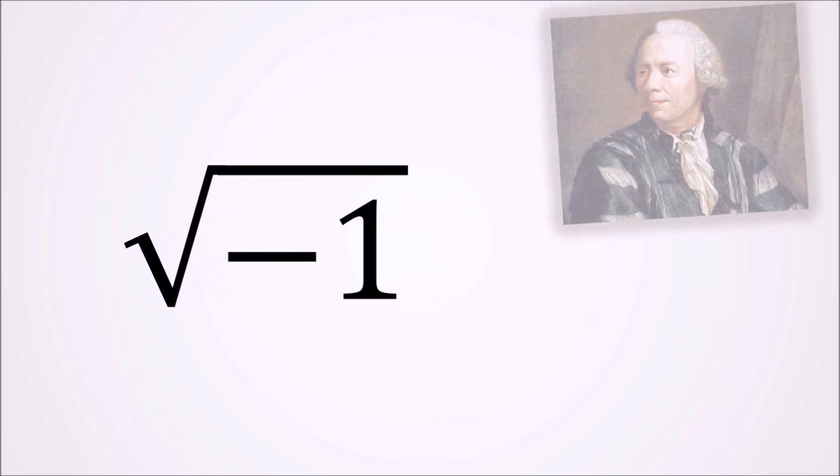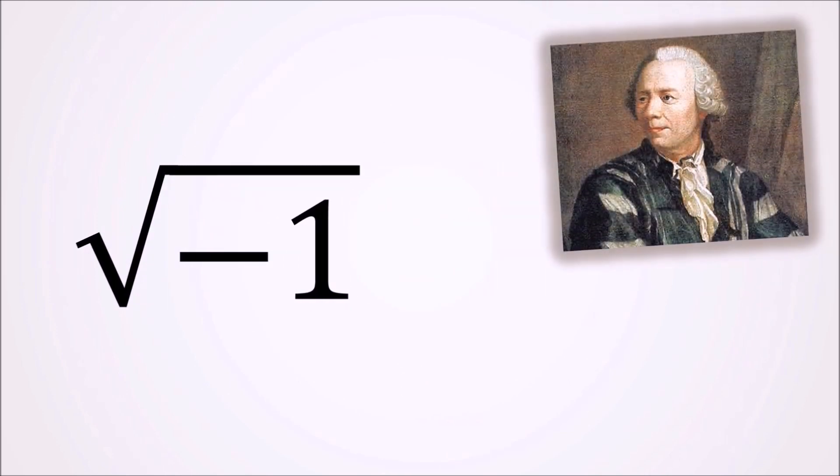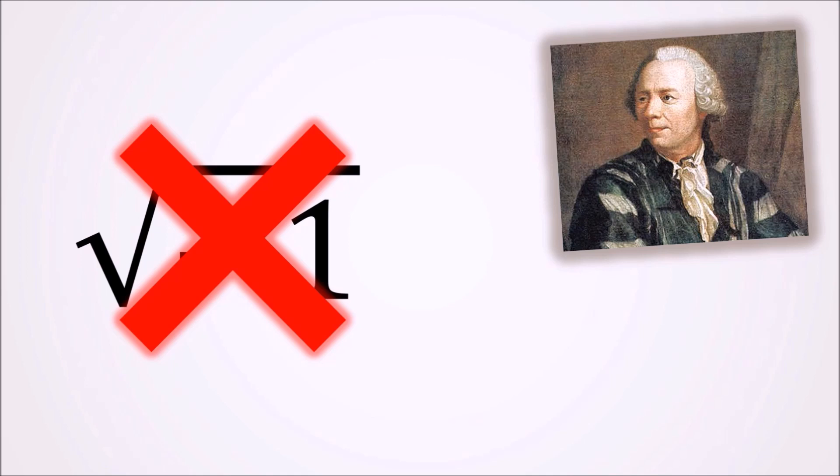One of the bedeviled ones was Leonhard Euler. He was the one who banned the notation square root of minus 1 and gave the expression its own symbol, the letter i of Imaginaire.